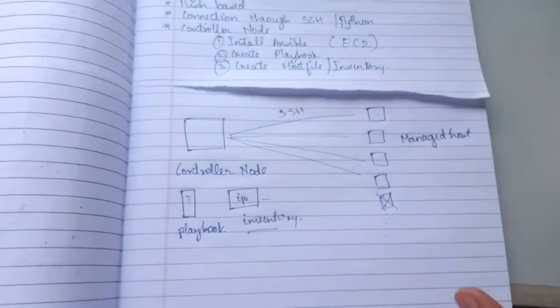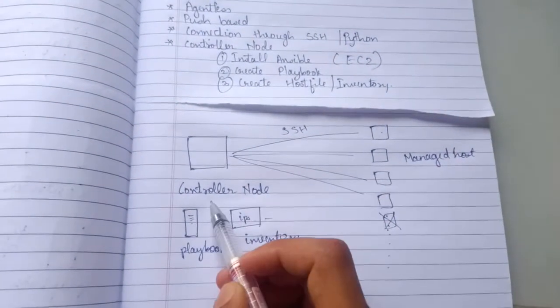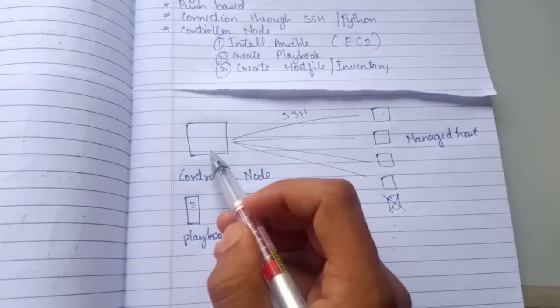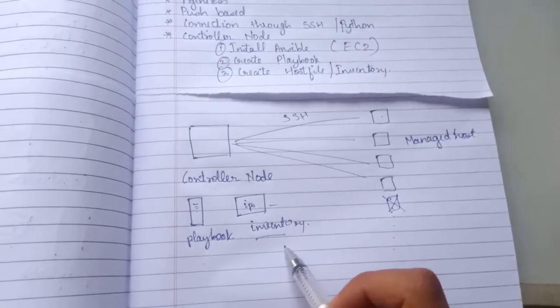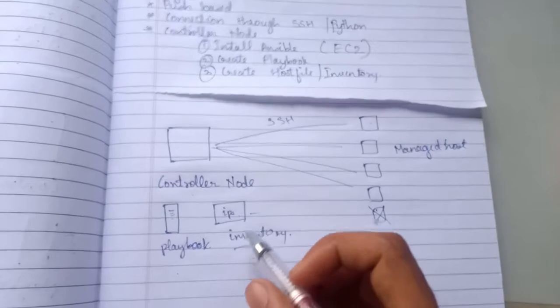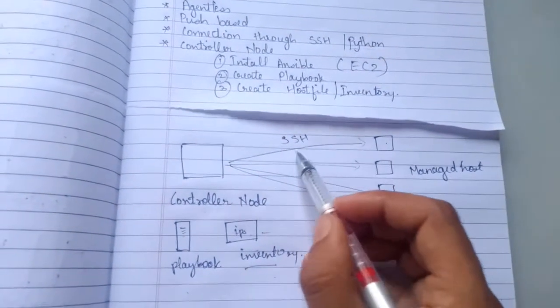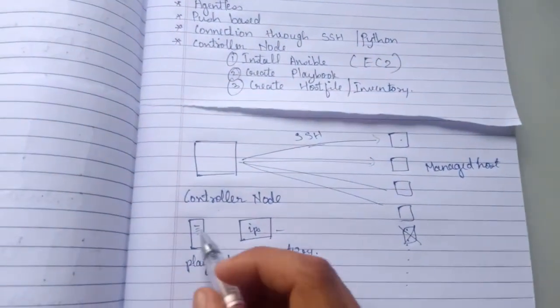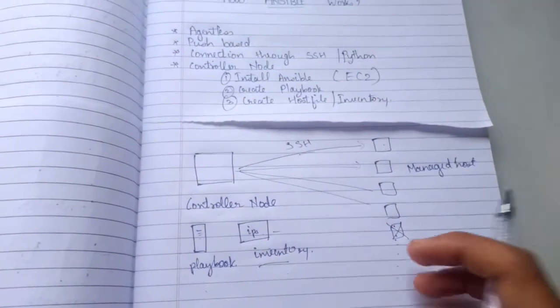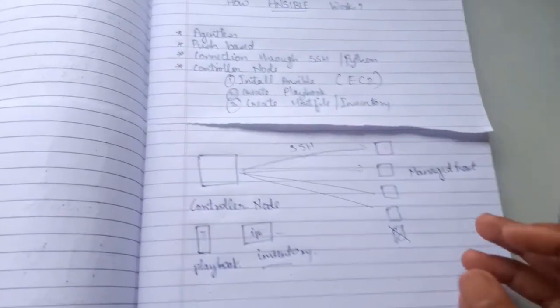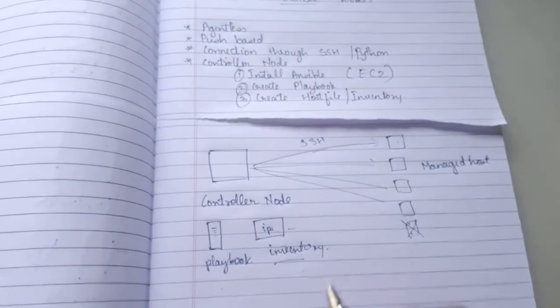So this is how actually Ansible works. Controller node is used for installing Ansible, for creating playbooks, and for creating inventory file. And it checks the inventory, connects the managed host using SSH connection, and it performs all the tasks. So this is how Ansible can be used to configure thousands and hundreds of servers with just a single command used to run a playbook.